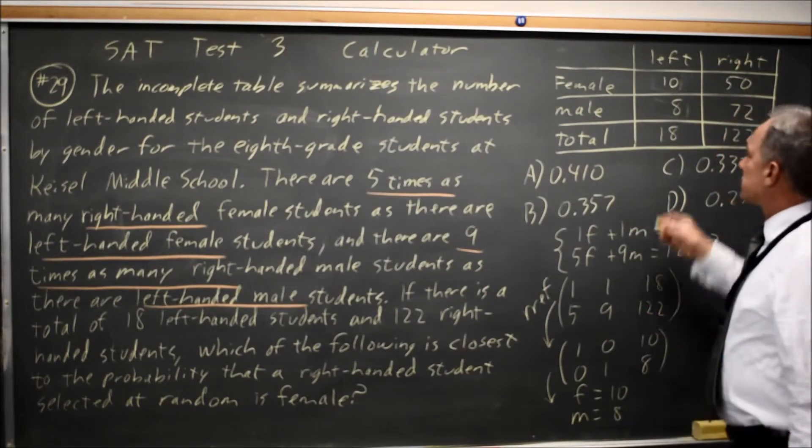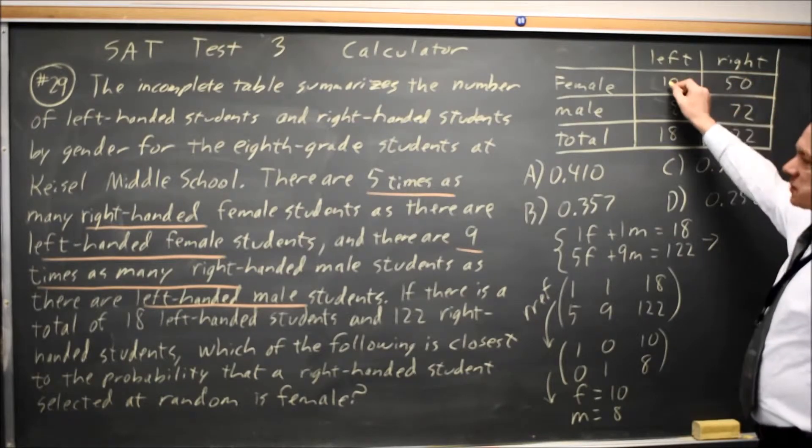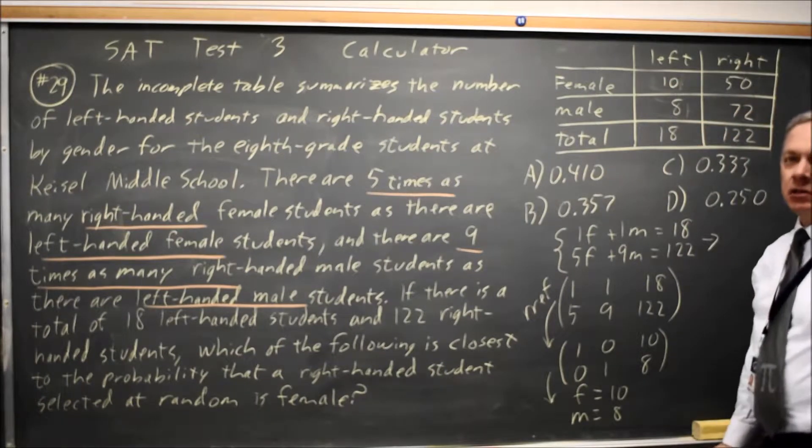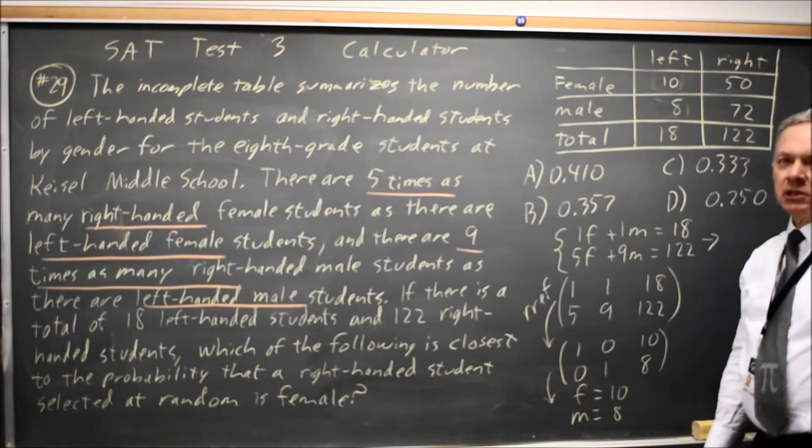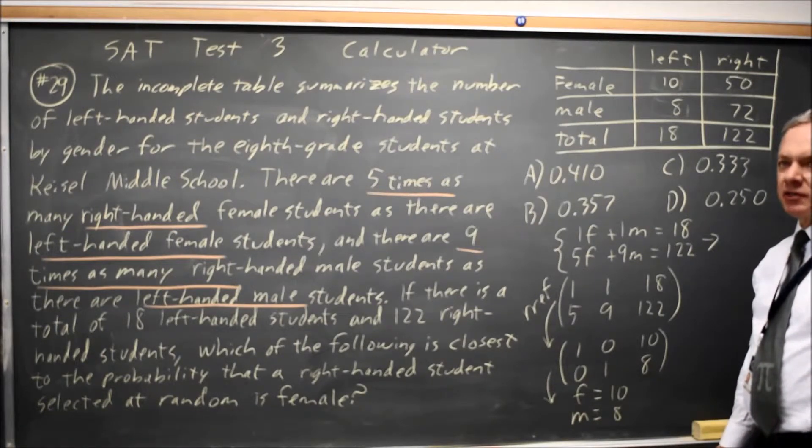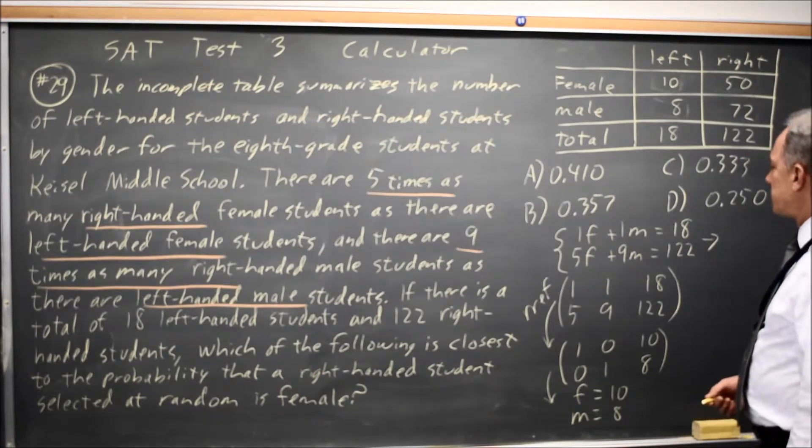And I can check: 10 plus 8 equals 18, 50 plus 72 equals 122. 50 is 5 times 10, 72 is 9 times 8, so the solution I arrived at matches the problem. Using matrices on the calculator is typically the fastest way of solving a system of equations, unless there's some other method that is very natural.